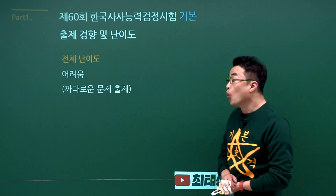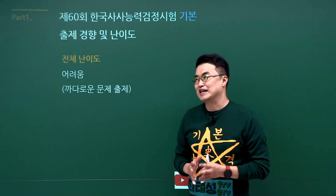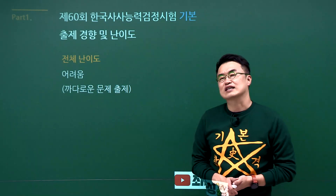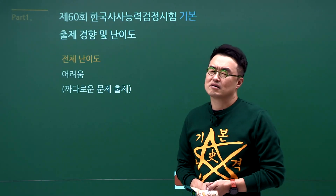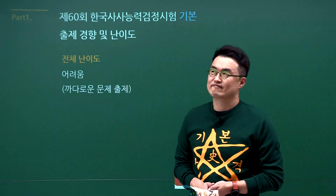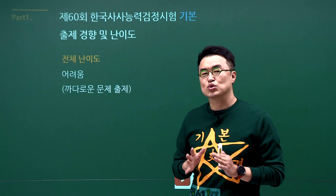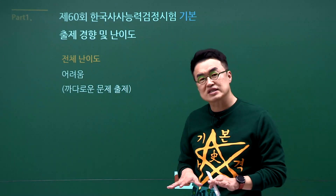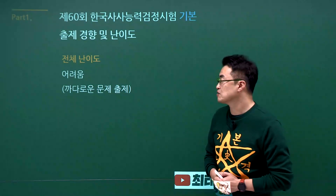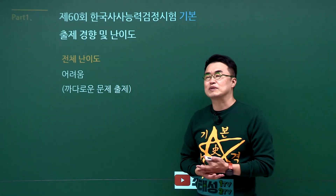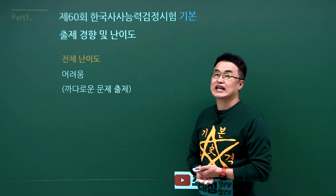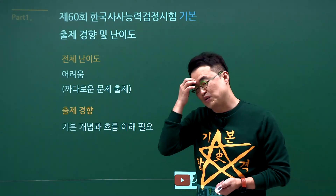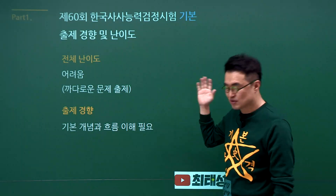60회 출제 경향 및 난이도. 수치상으로 봤을 때는 역대급 어려움이었다고 볼 수 있겠습니다. 까다로운 문제들이 많이 출제되었고, 이번 60회 시험이 8월에 본 시험이라 특히 초등학생들이 많이 응시해 합격률이 더 떨어진 측면이 없지 않아 있습니다. 결과론적으로 수치상으로 봤을 때 조금 어려운 시험으로 나타났습니다. 물론 개념 교재에 있는 내용만 공부하시면 다 풀 수 있는 문제들인 것은 확실합니다.